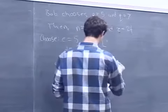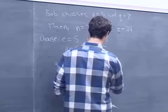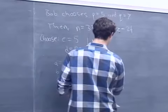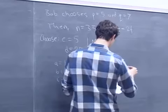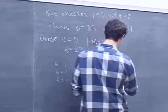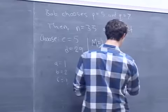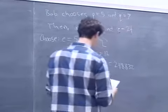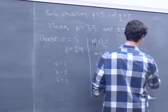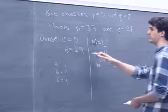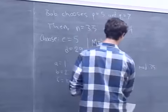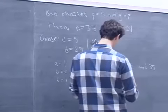To encrypt, we compute m raised to e, mod n. Here e = 5, so m^5 = 12^5 = 248,832. To get the ciphertext, we take 248,832 mod n, where n = 35.